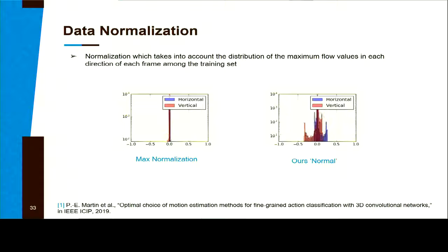We've shown in one of the papers that data normalization was very important in classification, so we used normal normalization. We use the distribution of the maximum values of the flow to divide them in consequence. Here you can see all the data are distributed between minus one and one when it's max normalization, and when it's ours we have a much more spread distribution.